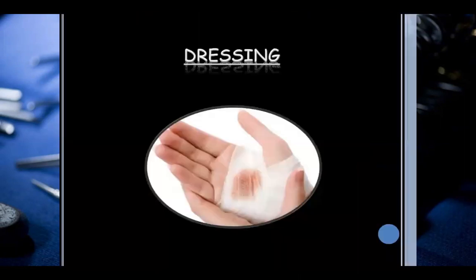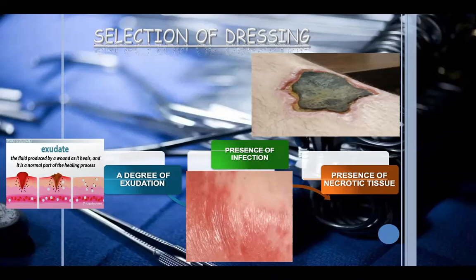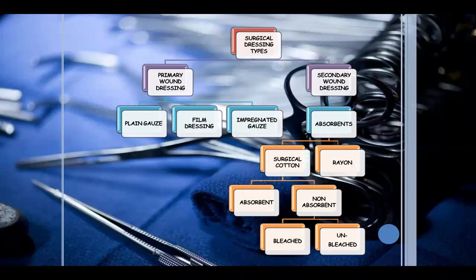Types of surgical dressings: first is the simple dressing. The selection of dressing depends on the degree of exudation required, presence of infection, and presence of necrotic tissue. You may find exudate, presence of infection over the skin, and necrotic tissue, so dressings are selected and applied according to the specific need and requirement of the wound. The dressing types are again primary and secondary wound dressings.